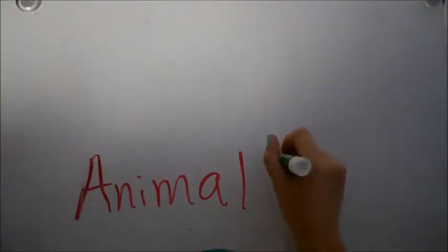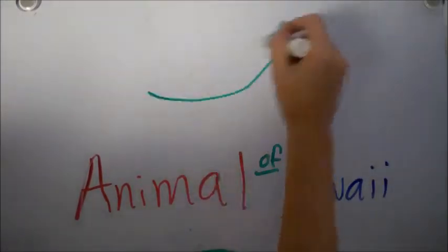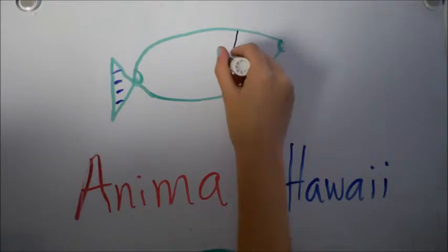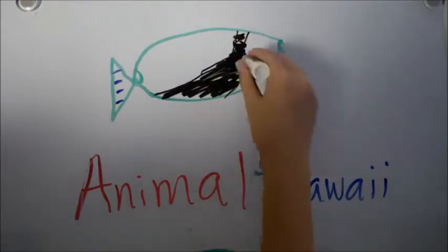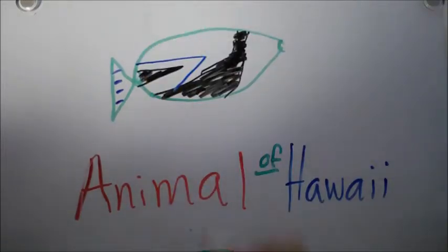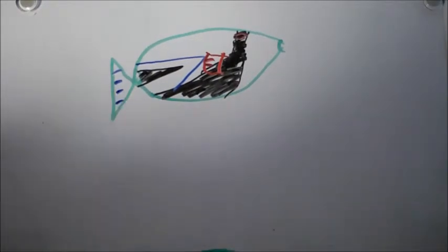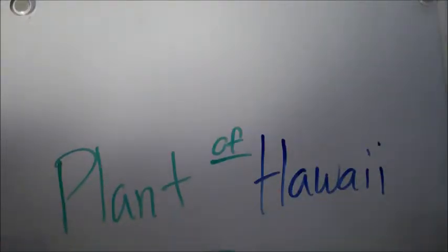An example of an animal in Hawaii would be the Hawaiian state fish, which is called the humuhumunukunukuapua'a. That I learned in elementary school how to say. And it's one of the longest words in Hawaiian language. But you can also call it the reef trigger fish.